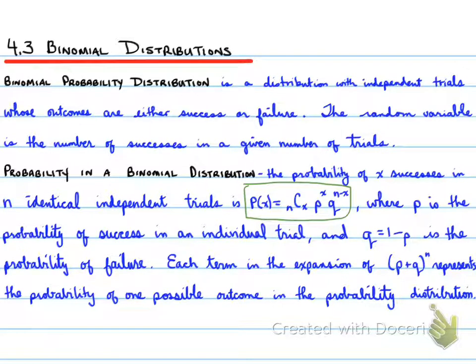Where p is the probability of success in an individual trial and q equals 1 minus p, the probability of failure. Each term in the expansion of (p+q)^n represents a probability of one possible outcome in the probability distribution.